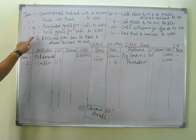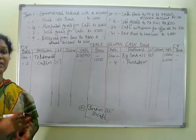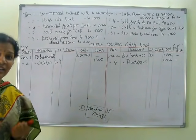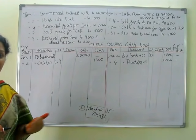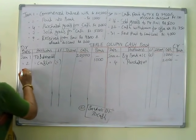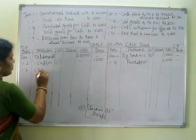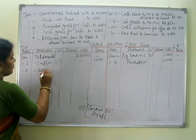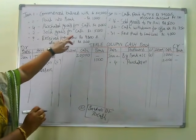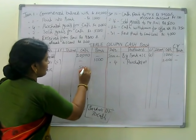Next, January 7th: sold goods for cash. Whenever we are selling goods on a cash basis we are getting cash, so that is a receipt — debit side. January 7th, to sales account. How much are we receiving? 5,000 — in the cash column.